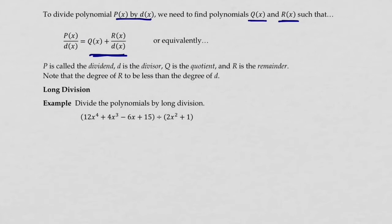P(x) is called the dividend, D(x) is called the divisor, Q is the quotient, and R is the remainder. One important thing to keep in mind is that the goal is to divide until we get a smaller degree for R than the degree for D. So we want the remainder to have a smaller degree than the degree of D.